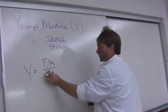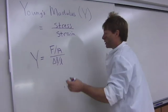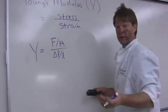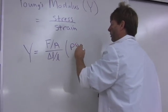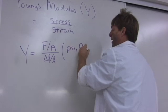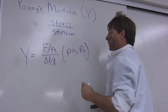And the units - change in length over length has no units, right? They all cancel out. Force per area, that's pounds per square inch or psi or pascals. It turns out to be units of pressure.